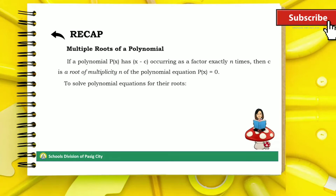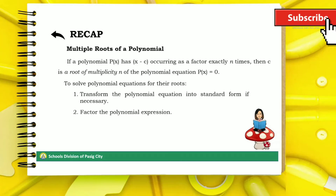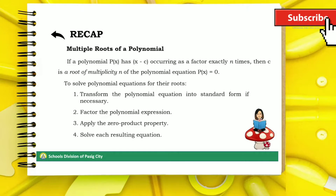To solve polynomial equations for the roots, the steps are as follows. First, transform the polynomial equation into standard form if necessary. Two, factor the polynomial expression. Three, apply the zero product property. Four, solve each resulting equation. And lastly, check the answer.